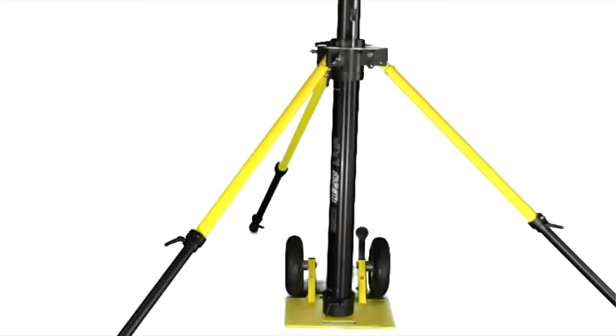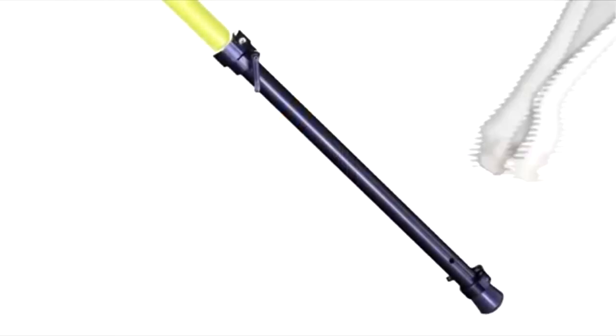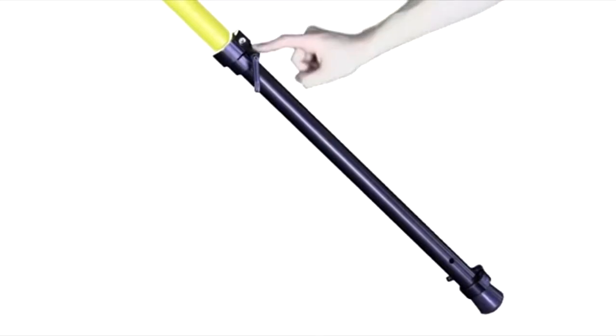At this point in the setup, your unit should look like this. Legs extended and locked into place. Shake the silver ring at the top of the base to confirm that your legs are rock solid. Any movement, readjust and try again.